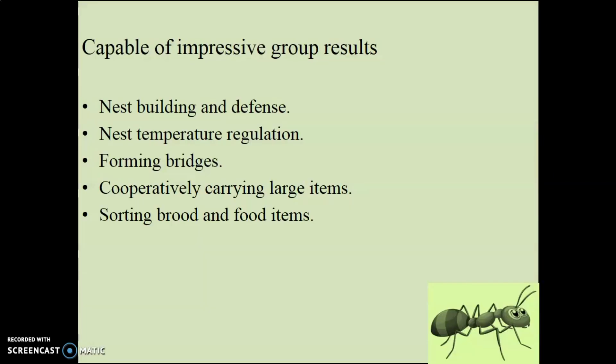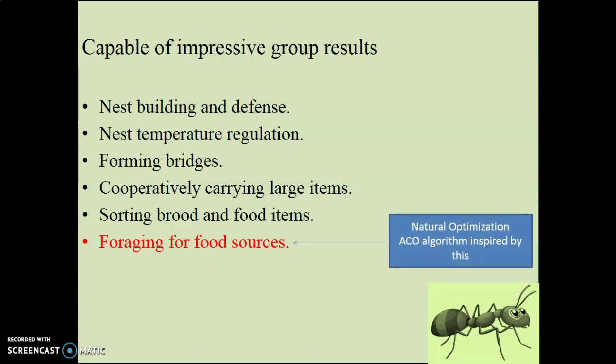But in groups, ants can achieve a lot — they are capable of impressive group results. For example: nest building and defense, nest temperature regulation, forming bridges, cooperatively carrying large items, sorting brood and food items, and foraging for food sources. Foraging means when they search for food sources together. The ant colony optimization algorithm is inspired by this behavior known as foraging for food resources.